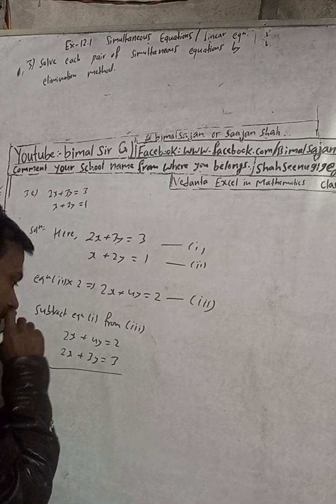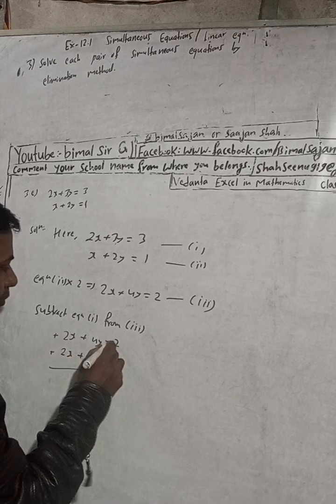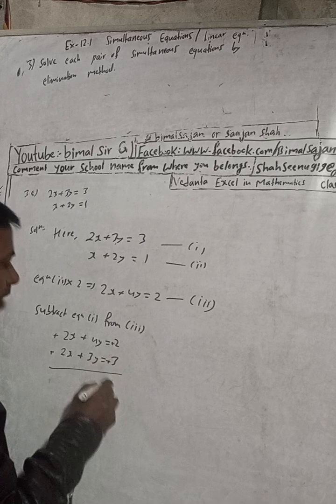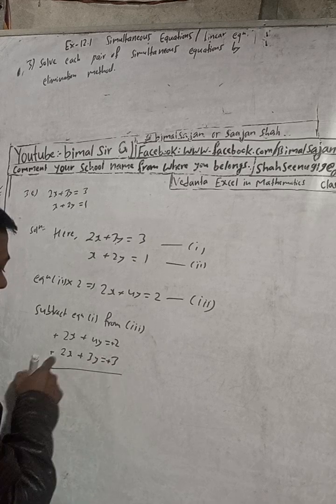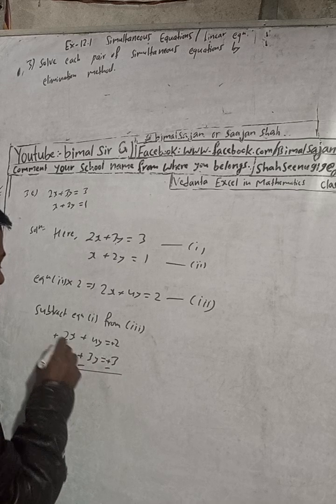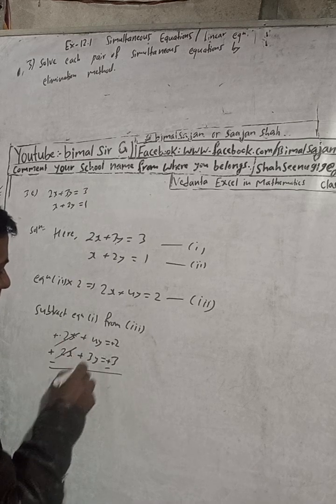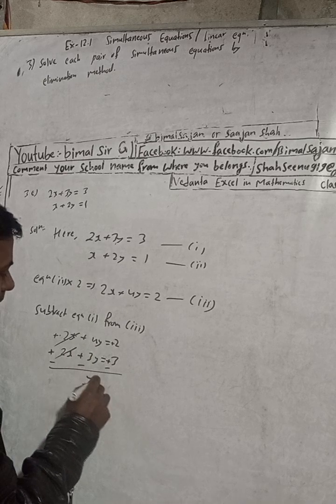So what we have to do? Now change the sign of this part. This is plus, so minus. This is plus, then minus. This is plus, then minus. 2x minus 2x is 0. Now it is 4y minus 3y, so that is y.